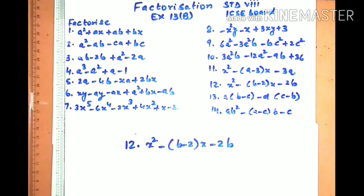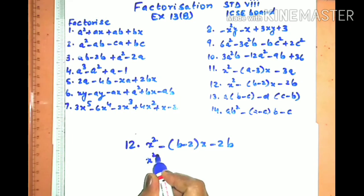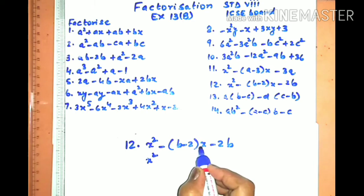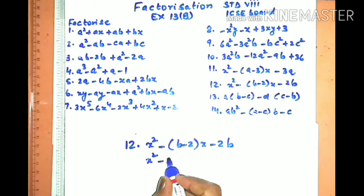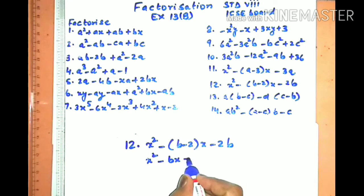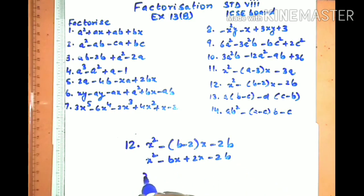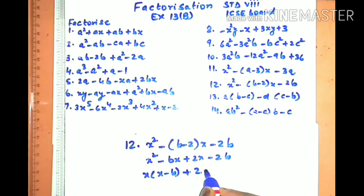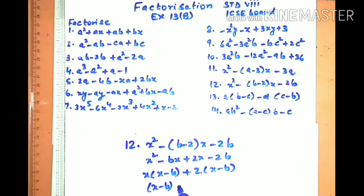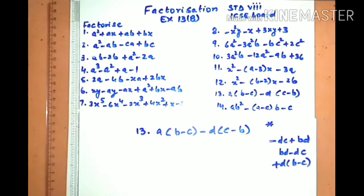Sum number twelve is similar to eleven. The middle term is multiplied by minus x, giving −bx + 2x − 2b. x is common from the first pair, giving (x − b) in the bracket. 2 is common from the second pair, giving (x − b) in the bracket. So (x − b) is the common factor and the remaining bracket is (x + 2).